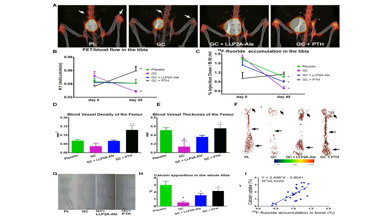Now I want to talk about work our research group has been doing over the last few years regarding glucocorticoid-induced osteonecrosis. We started doing sodium fluoride PET scanning of the tibia and femurs of mice. When mice were given glucocorticoids for six weeks, they had a reduction in blood flow. In this study, PTH was able to prevent that loss of bone blood flow. We also did microfill and found that glucocorticoid-treated mice had reduced blood vessel density and thickness.